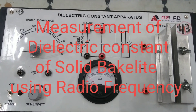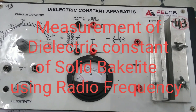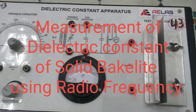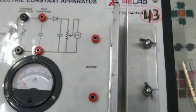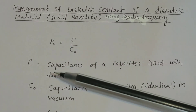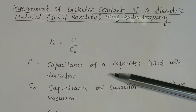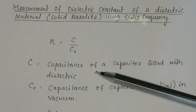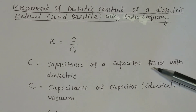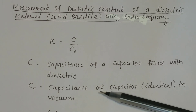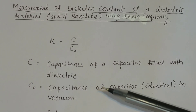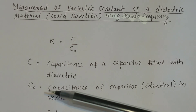Measurement of dielectric constant of a dielectric material — here we have taken solid bakelite — using radio frequency. In this apparatus, we will find out the dielectric constant of bakelite. Dielectric constant of a material is given by the formula k equal to C divided by C0, where C is the capacitance of a capacitor filled with dielectric. Here we have taken a parallel plate capacitor, and C0 is the capacitance of an identical capacitor in vacuum. We have to find out the capacitance of the parallel plate capacitor C0.